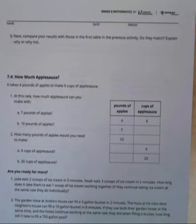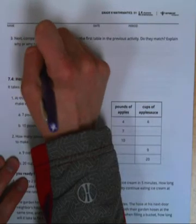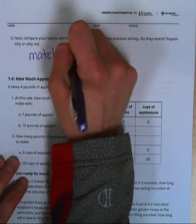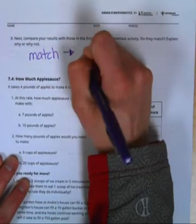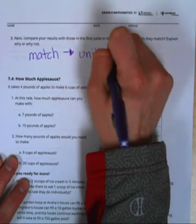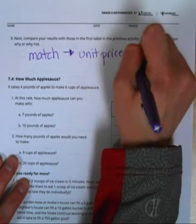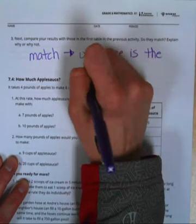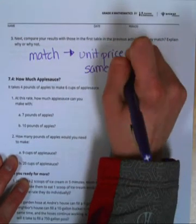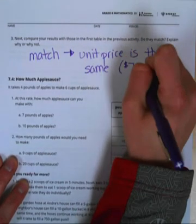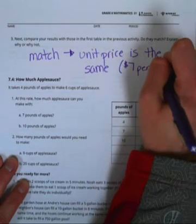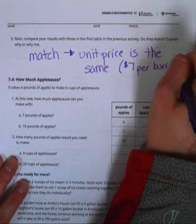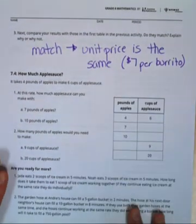You notice that's the same table from earlier. Yes they did that on purpose. Question three says compare your results with those in the first table. Do they match and explain why or why not? Well we did these together so they should match. They should match because the unit price is the same in both tables, seven dollars per burrito.